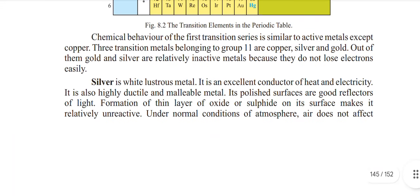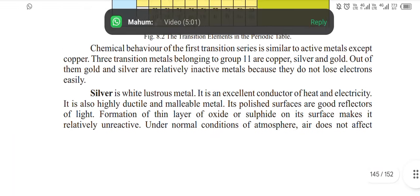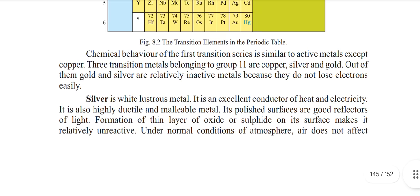The chemical behavior of the first Transition series is similar to active metals, except copper. The Transition Metals belonging to Group 1 are copper, silver, and gold. Out of them, gold and silver are actually inactive metals because they do not lose electrons easily.